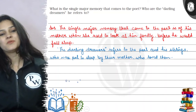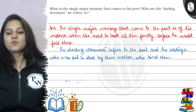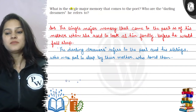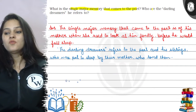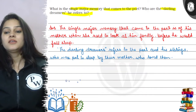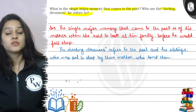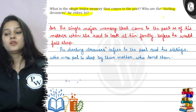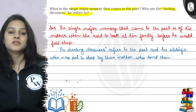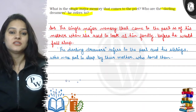Hello guys, let's see our question. Our question says, what is the single major memory that comes to the poet, and who are the darling dreamers he refers to?